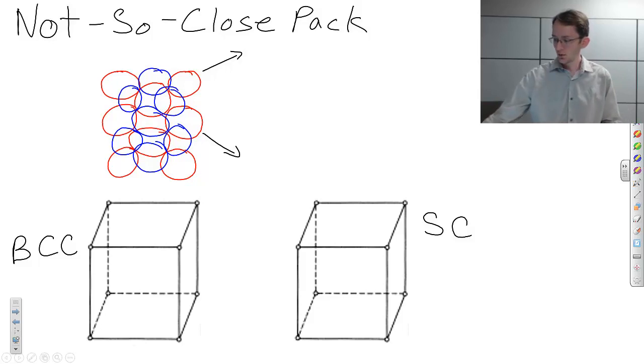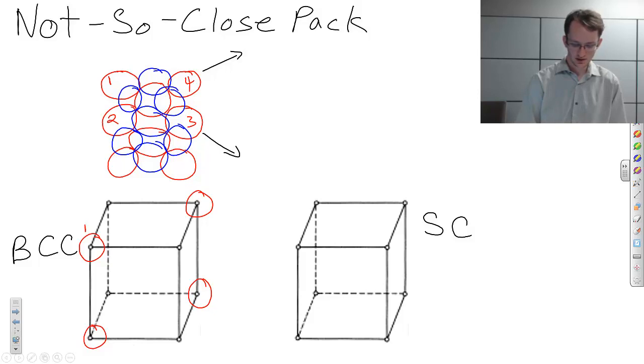what we'd see is that the red atoms would sit at these corners. Well, this would be 1, 2, 3, 4. This would be 1, 2, 3, 4. And there'd be an atom in the center, 5. And that would be in the very center of this cube. Hence the name, body-centered cubic.